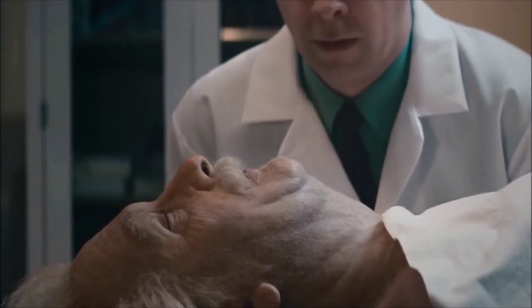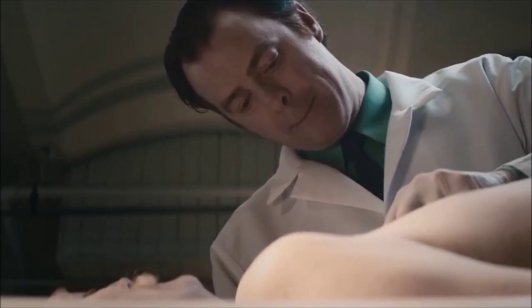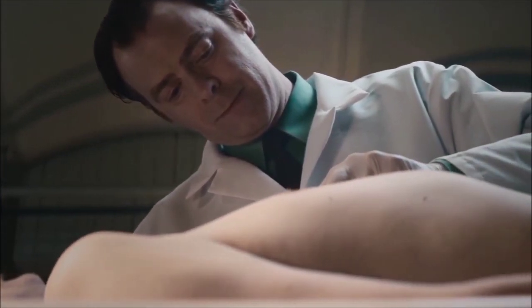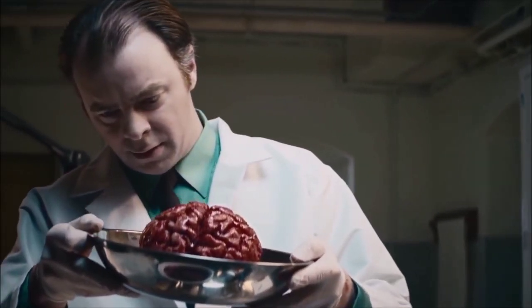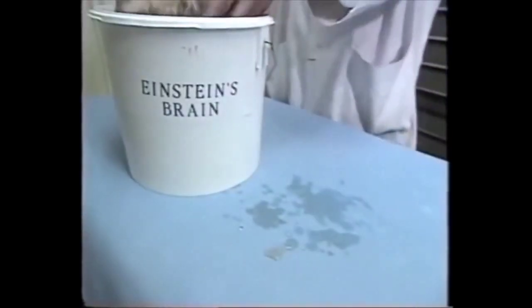After his death, a pathologist named Thomas Harvey was called to conduct the autopsy on Albert Einstein. But without even taking permission from Einstein's family, Harvey stole Einstein's brain and ran away.